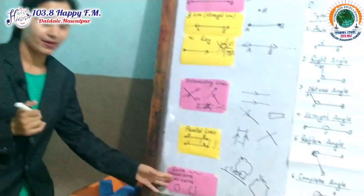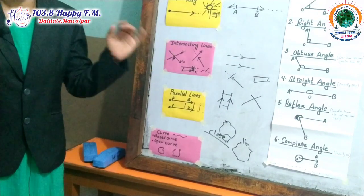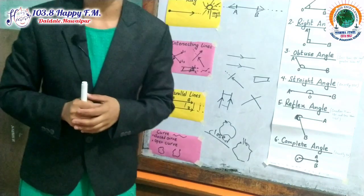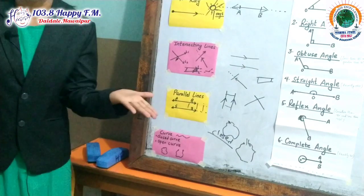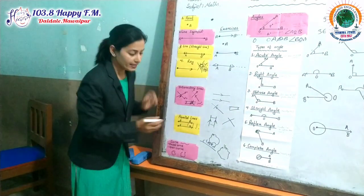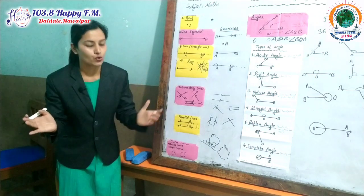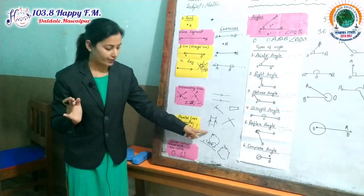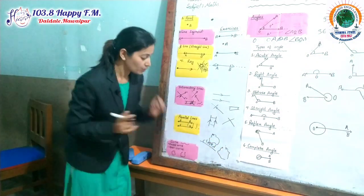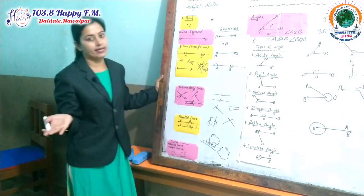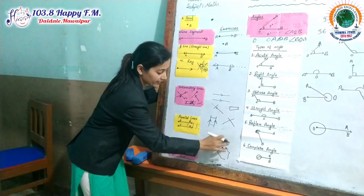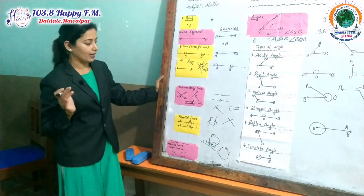The next topic is curve. Curve means when we draw a zigzag line, it makes a curve. There are two types of curves: closed curves and open curves. A closed curve means the curves whose origin and ending point are close to each other — they are closed curves. Open curves are very easy to understand: the curves whose origin and ending point are not common — they are different, with a little distance between them. Those are open curves.